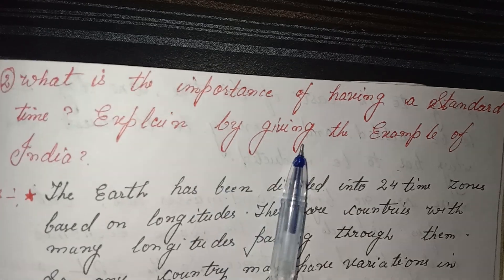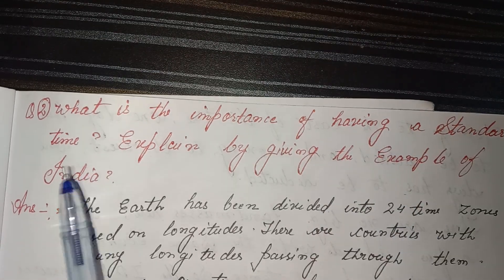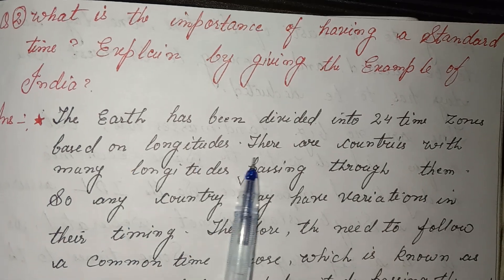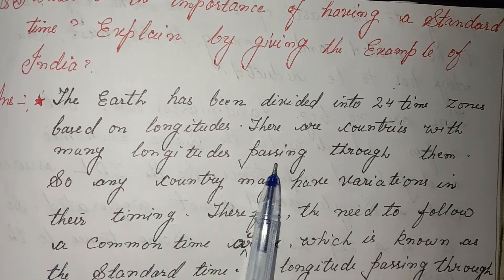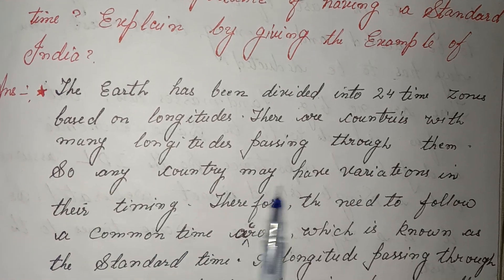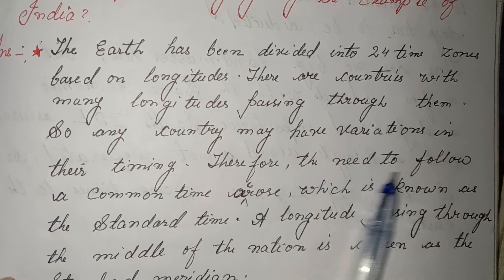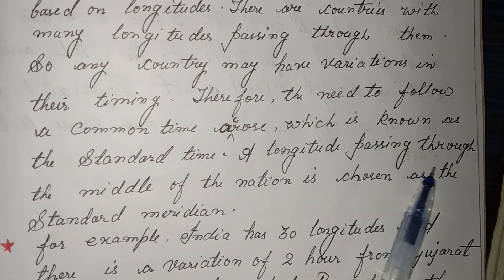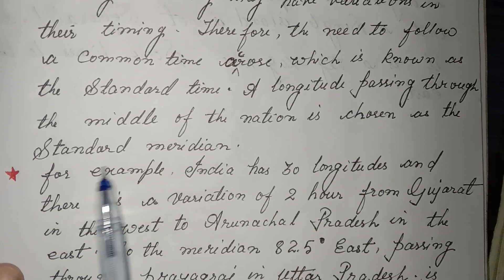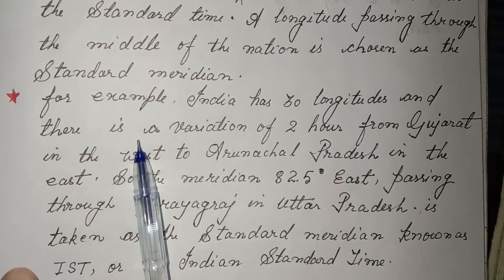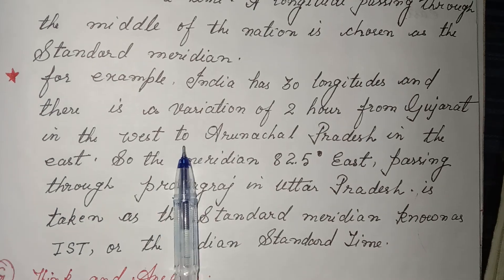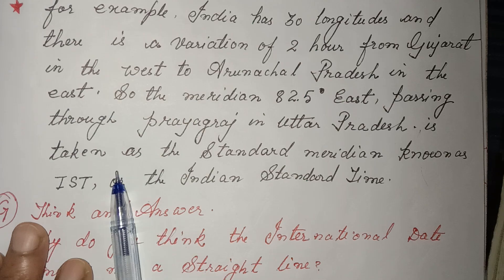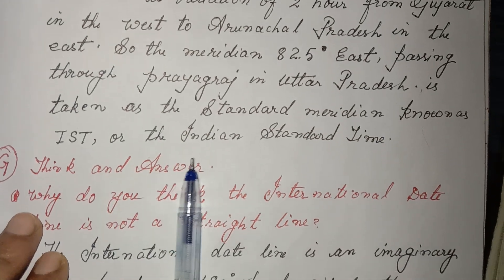Second: what is the importance of having a standard time? Explain by giving the example of India. Answer: the earth has been divided into 24 time zones based on longitudes. Countries with many longitudes passing through them may have great variation in their timing. Therefore, there is a need to follow a common time, known as the standard time. A longitude passing through the middle of the nation is chosen as the standard meridian. For example, India has 30 longitudes and there is a variation of two hours from Gujarat in the west to Arunachal Pradesh in the east. So the meridian at 82.5 degrees East, passing through Prayagraj in Uttar Pradesh, is taken as the standard meridian, known as IST or Indian Standard Time.